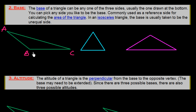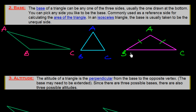In an isosceles triangle, the base is usually taken to be the unequal side. Here in triangle ABC, if this side is equal to this side, then the unequal side would be the base. So the unequal side is always taken as the base in an isosceles triangle.